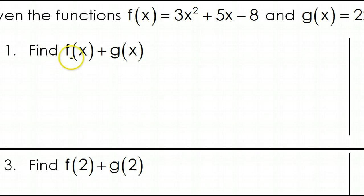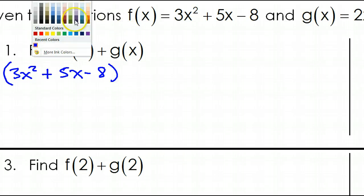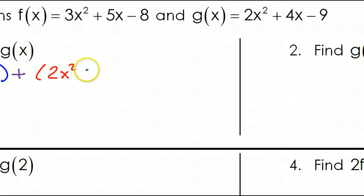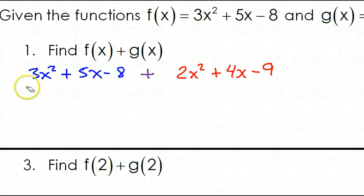Back to the assignment. To find function f plus function g: here's function f, that's 3x squared plus 5x minus 8. And now we need to add function g, which is 2x squared plus 4x minus 9. So we're adding these two functions. When you're adding, the parentheses are not really doing anything, so you could erase them without changing the value of the expression.